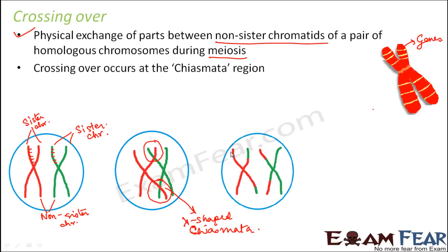Due to crossing over, it was observed that 50% were parental type whereas 50% were recombinant type, in the case of unlinked genes. So in case of unlinked genes also, we see a lot of recombinations, and those recombinations happen because of crossing over only. How much recombination will happen depends on how much crossing over will take place, and how much crossing over will take place depends on the linkage between the two genes. If the genes are very much linked, then less crossing over will take place, but if the genes are not that much linked, then more crossing over will take place.